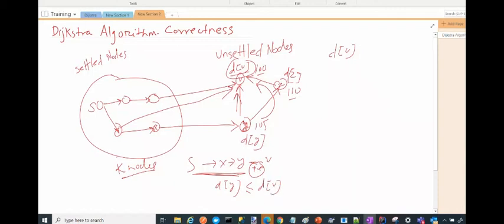D(V) was the minimum, which means D(V) was even less than or equal to D(Y).